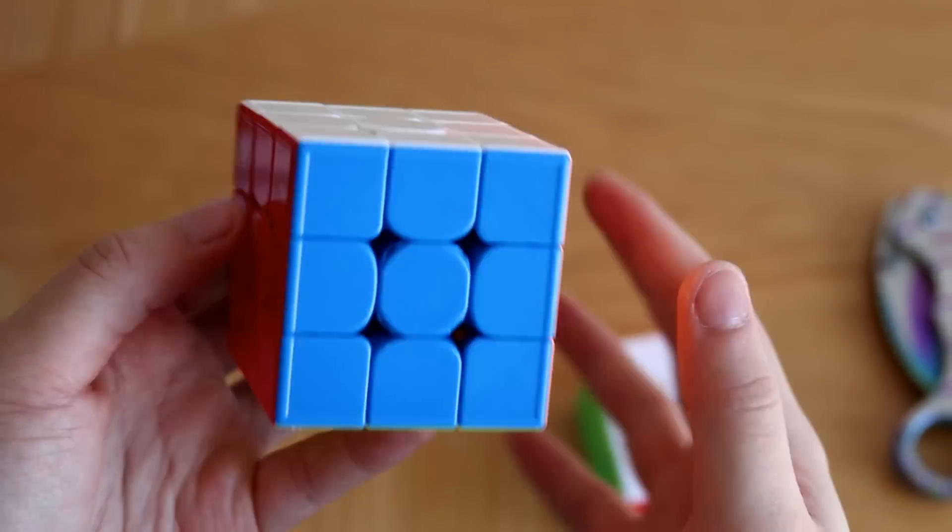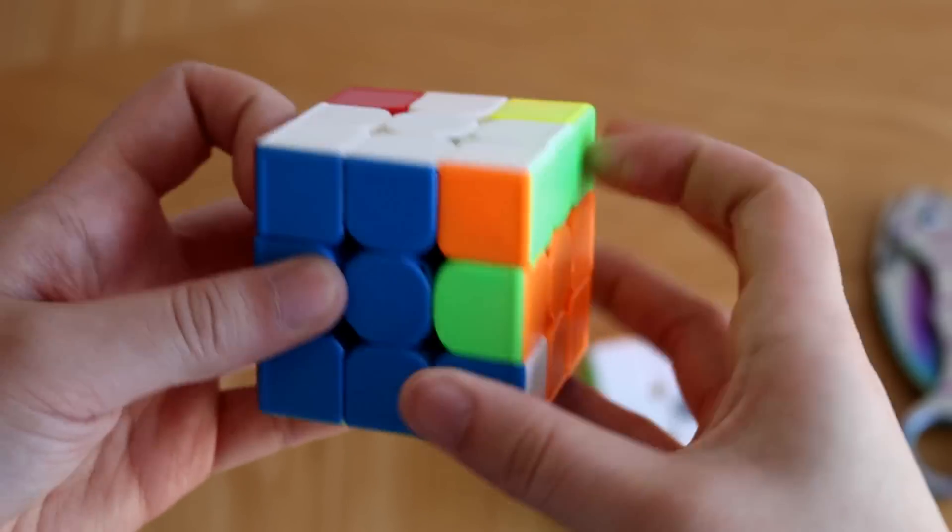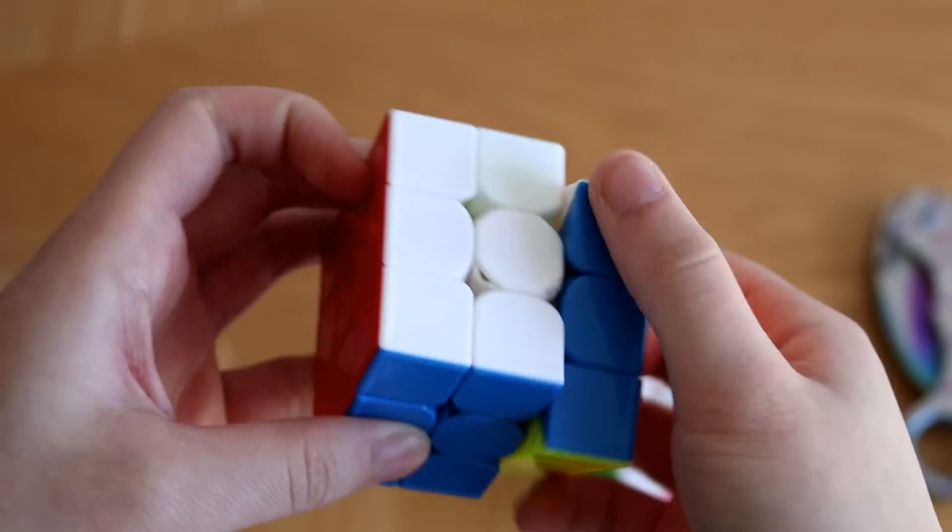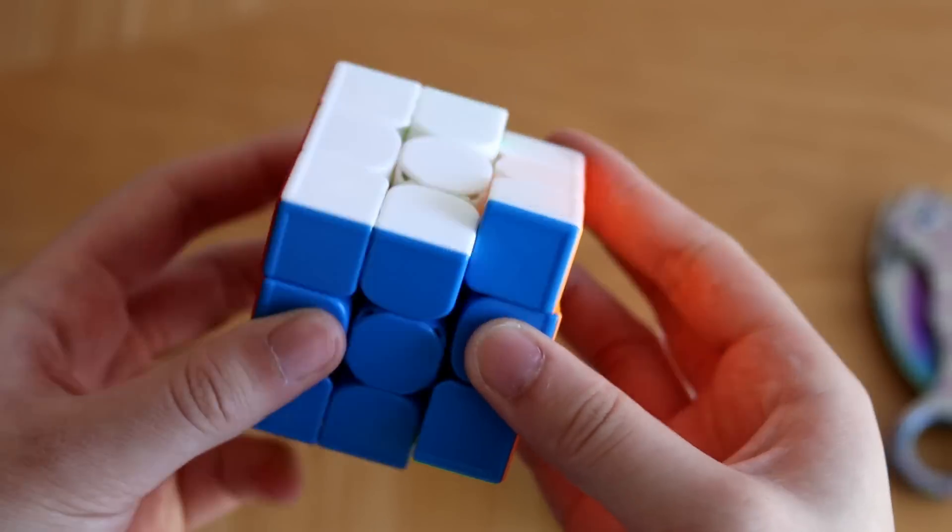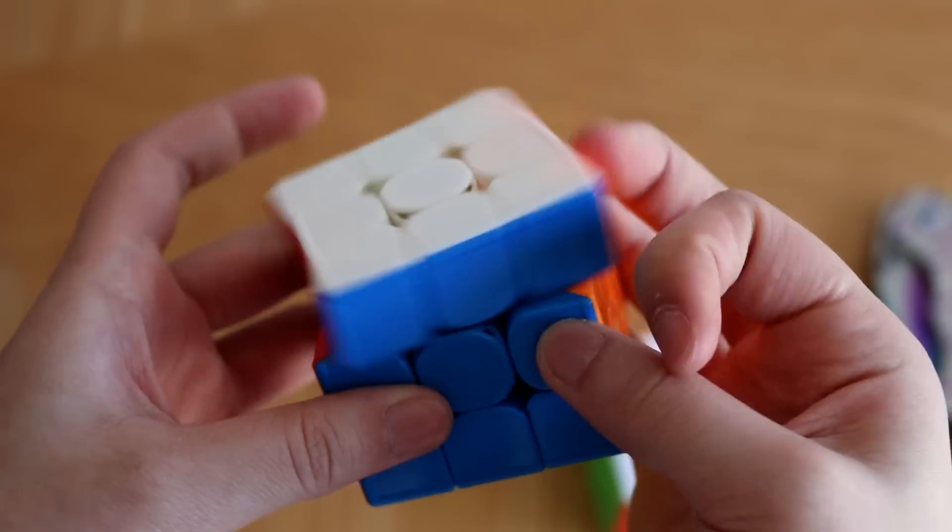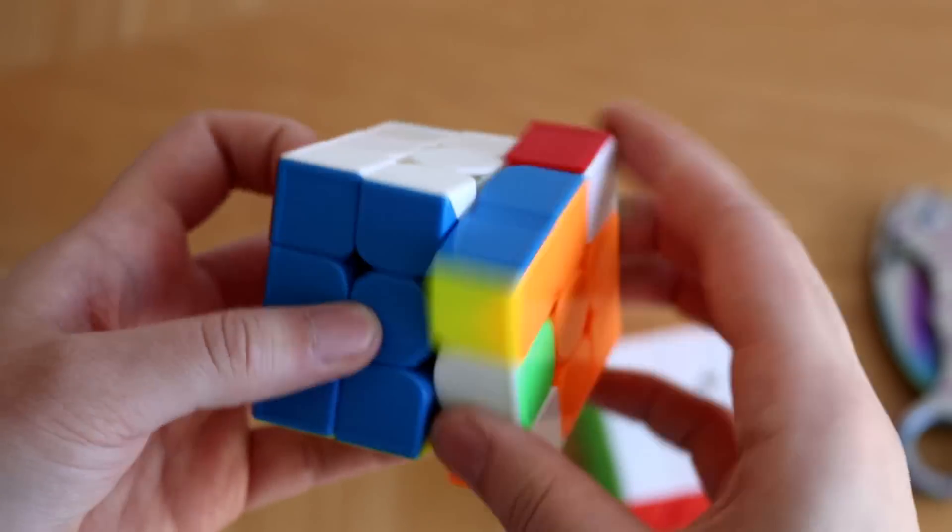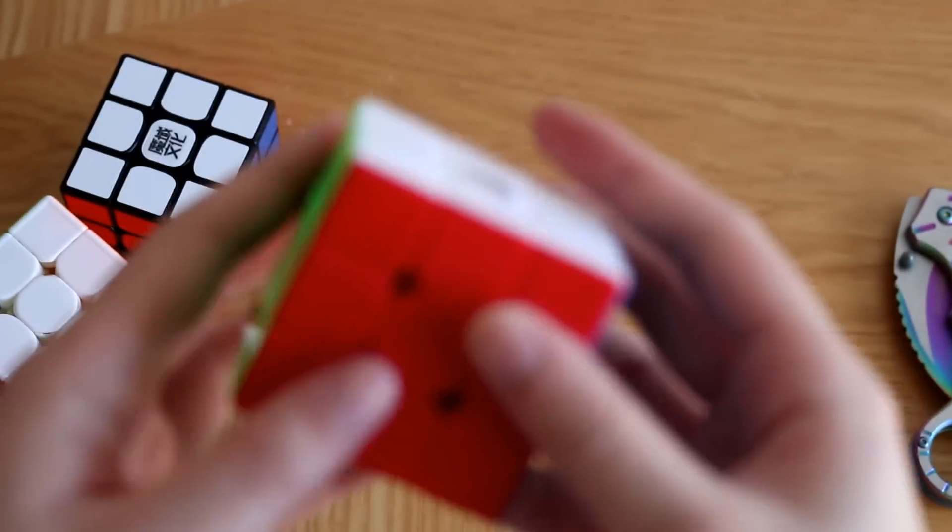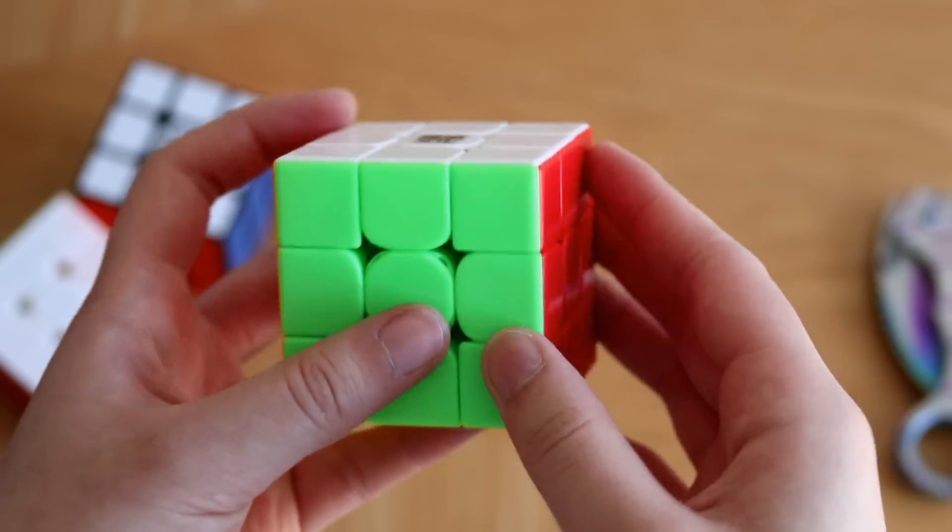So I actually have the LM GTS3 right here. And the magnets are just a lot more suitable for this puzzle. The original stock GTS3M, the magnets are way way too strong for me. And it is a fast puzzle, but just the slightest hint of magnetic stability will go a long ways. So let's go ahead and compare it to the ridgeless Weilong WR.